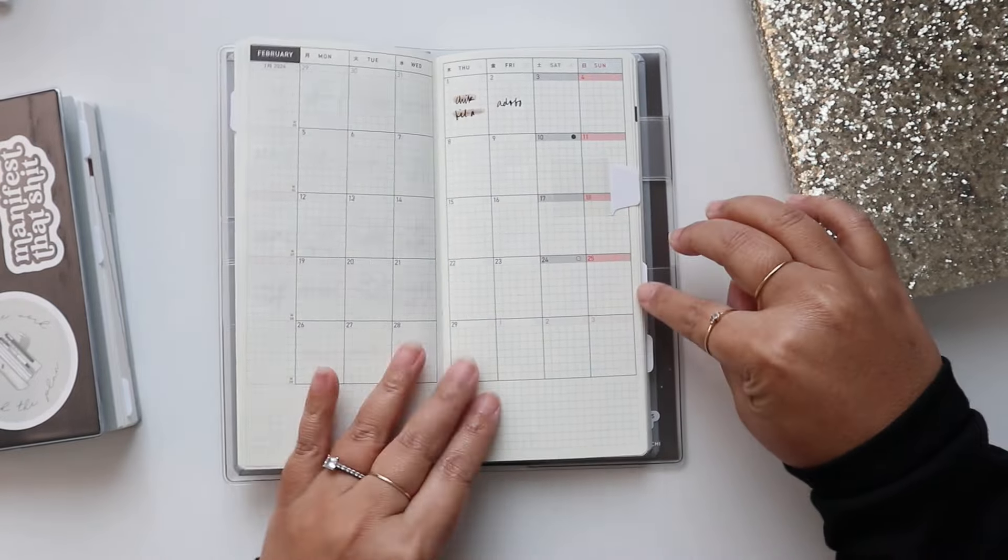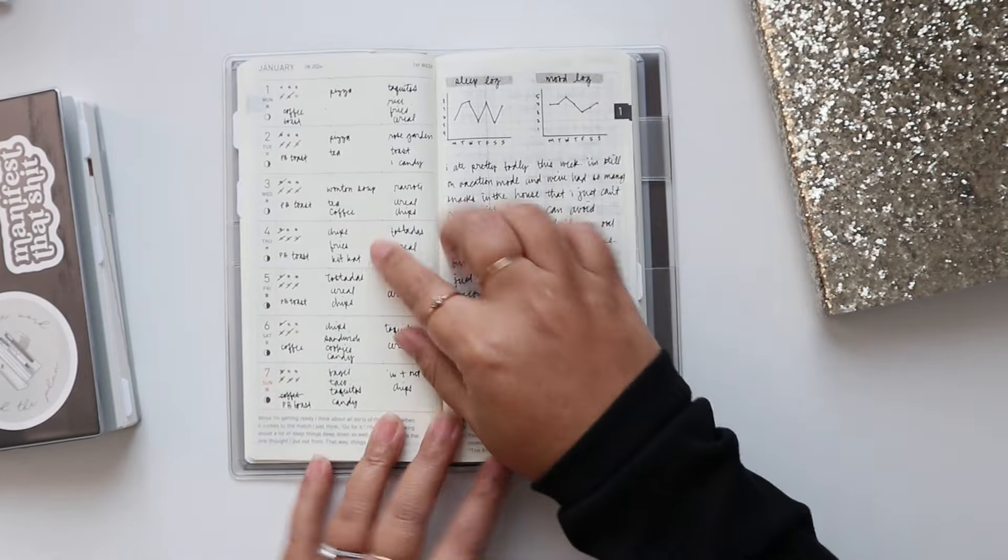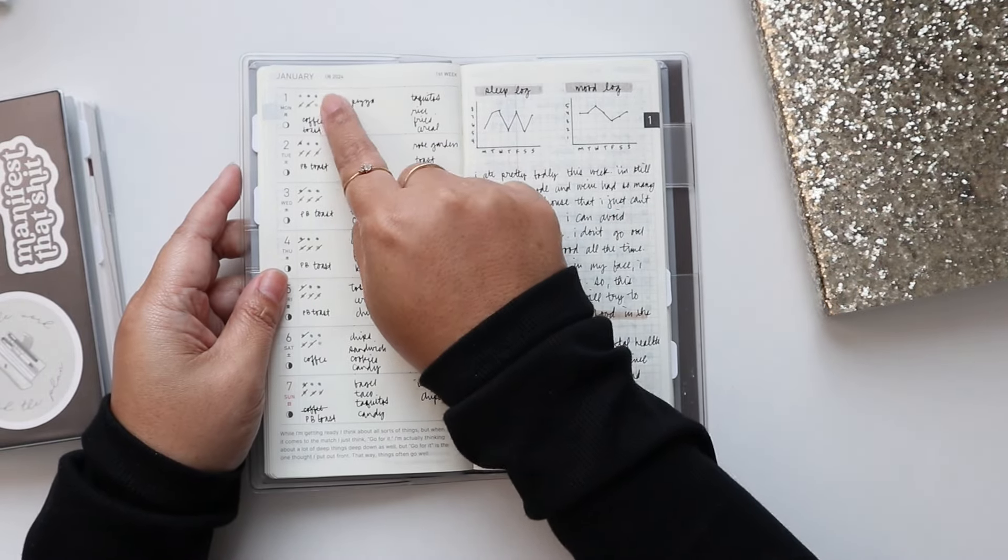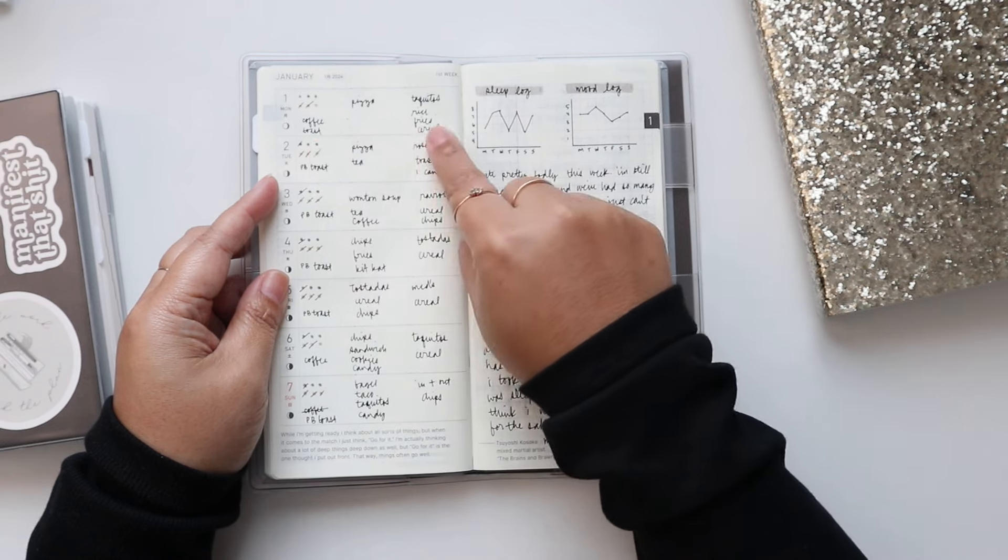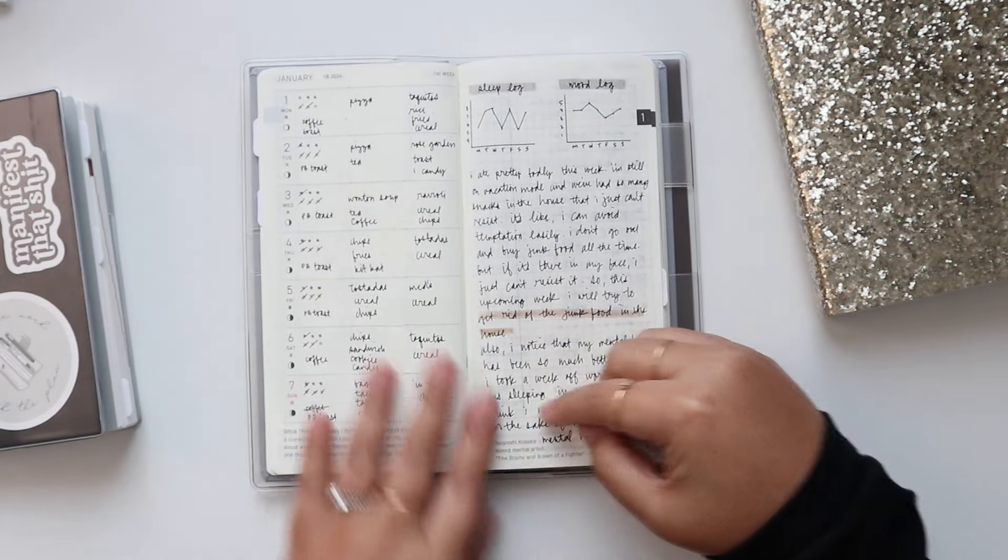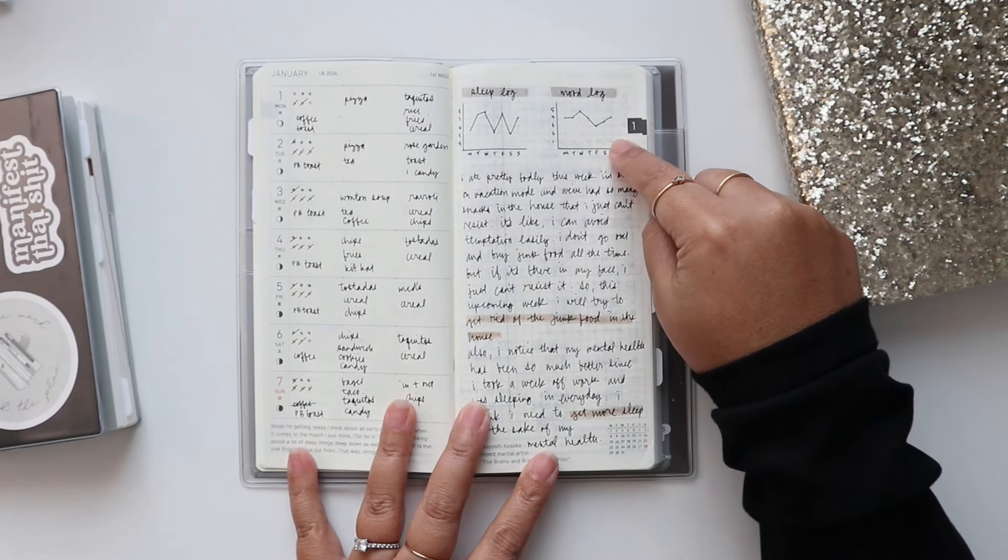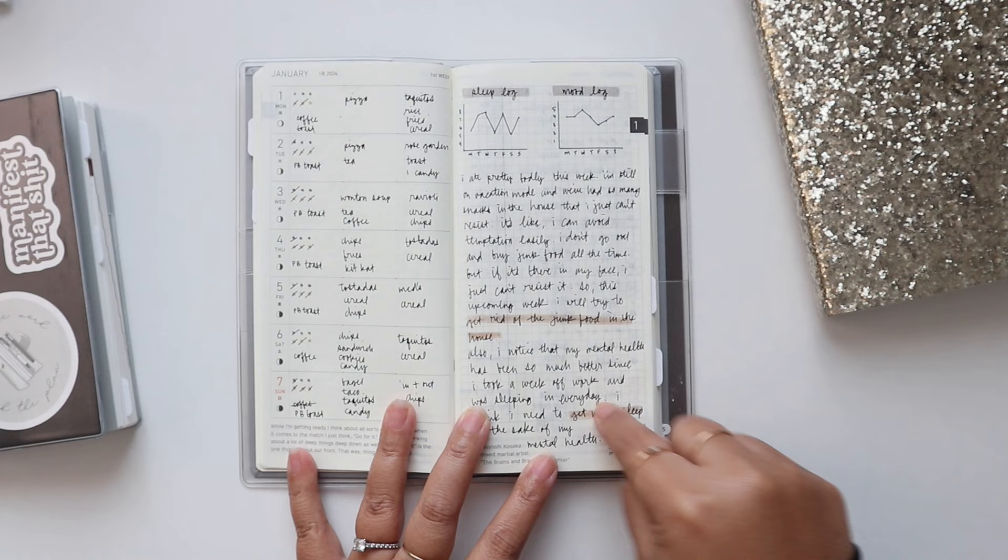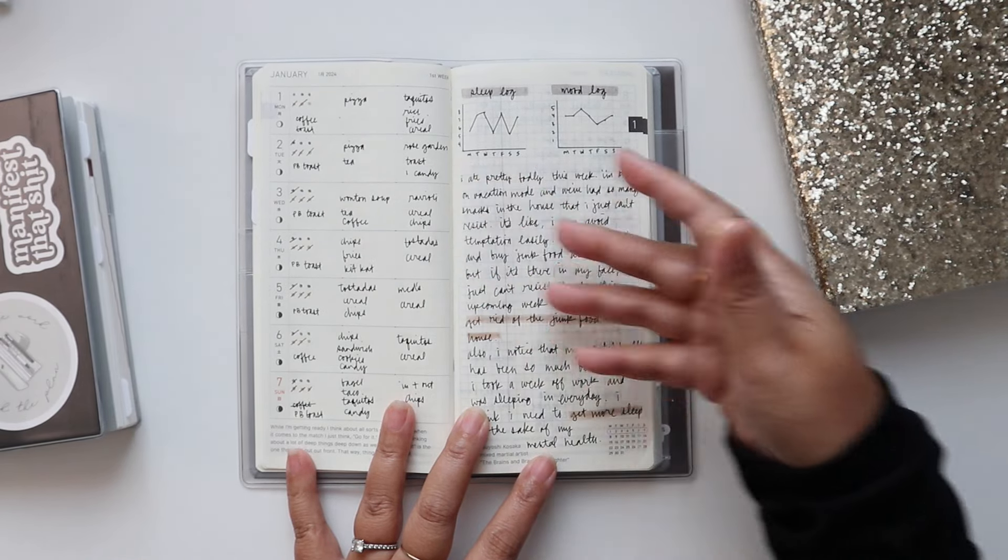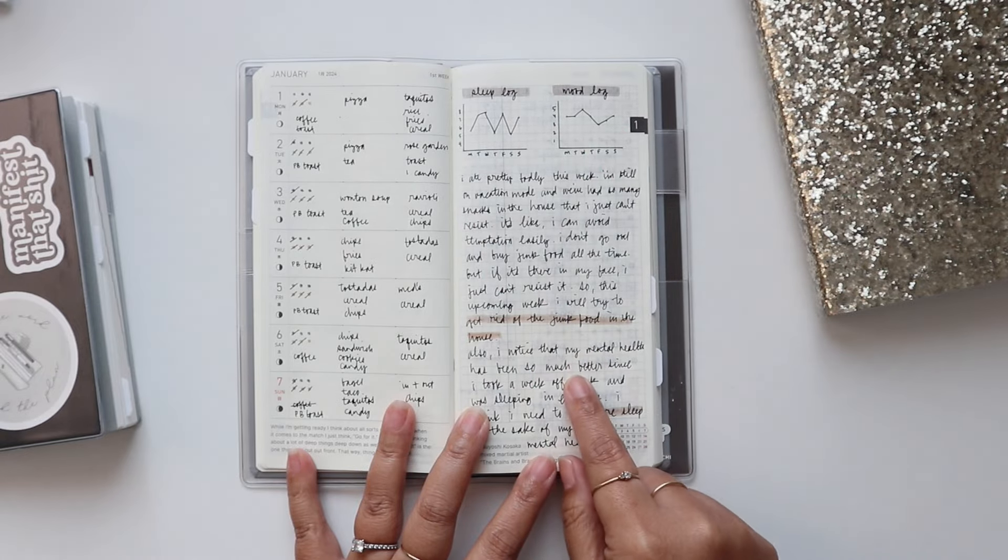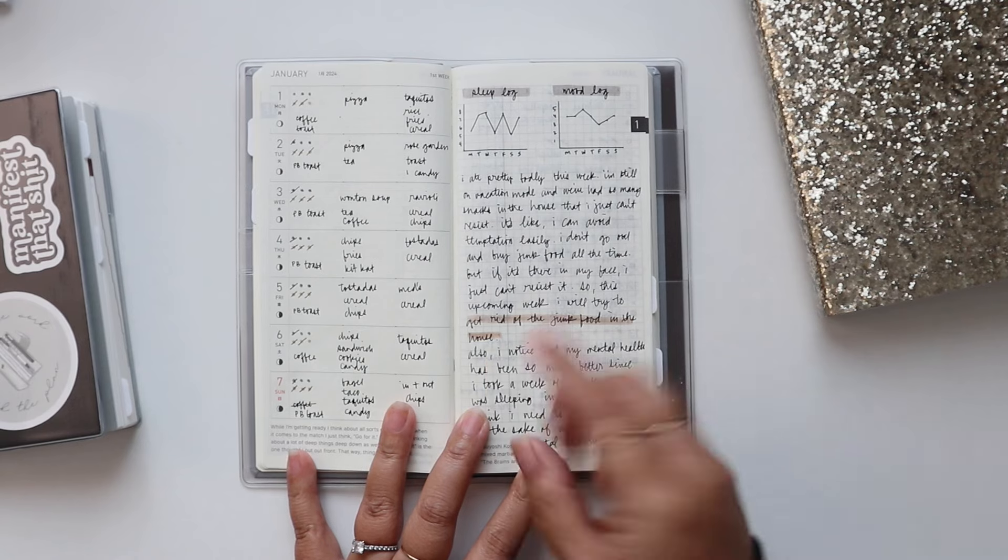And then in the weekly section I really actually have been enjoying filling this out. Here is where I track my water intake, my meds, and then what I eat every meal, snack, and all of that. I track on this side and then here I track my sleep and my mood and then here I write any reflections for the week. What I think, like if I had a bad eating couple days I try to write about it over here like what I think happened and then I highlight my takeaway.